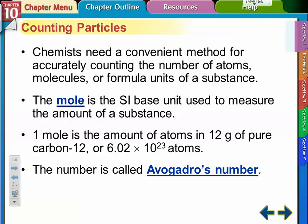Avogadro's number was developed by a chemist in the early 1900s. We'll see why it's so important in the next section — going from Avogadro's number to grams is really what we're after. To figure out how many grams are involved in a chemical reaction, we need to use moles and Avogadro's number.